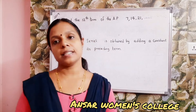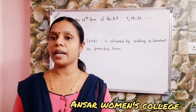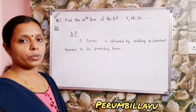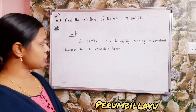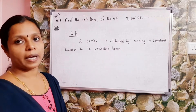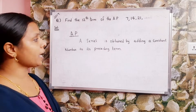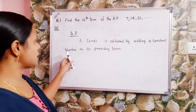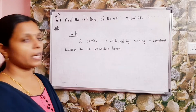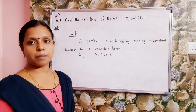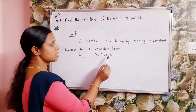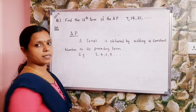First we are going to discuss the definition of Arithmetic Progression. An Arithmetic Progression is a series obtained by adding a constant number to its preceding term. For example: 2, 4, 6, 8, etc.